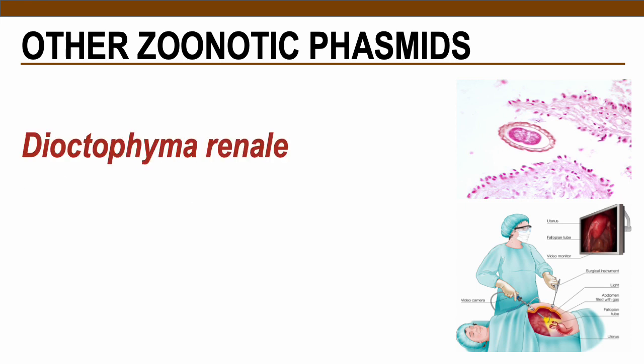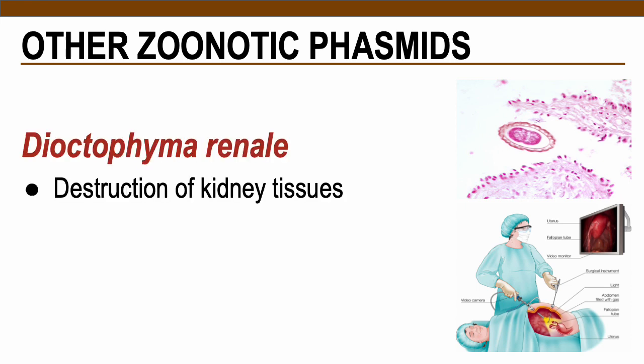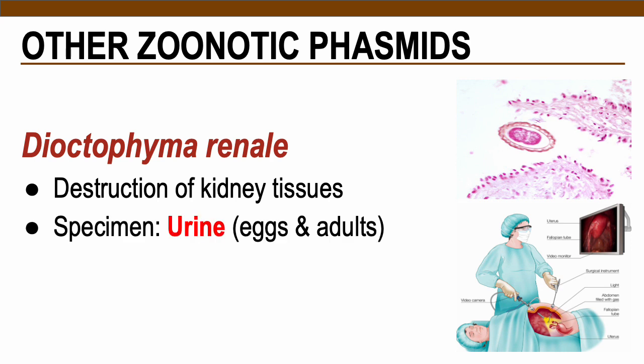In terms of pathology, this causes destruction of kidney tissues. The methods that can be used are tissue biopsy, or we can also require a urine sample from the patient. But remember, this is only acquired by laparotomy — the surgical incision of the abdominal cavity and extraction using a surgical instrument to collect urine from the bladder.